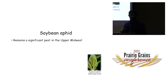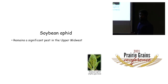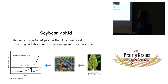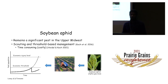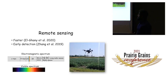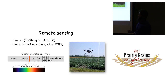Soybean aphid is a new species feeding on soybean and remains a significant pest in the upper Midwest. Treatment decisions are based on field scouting and comparing populations to an economic threshold, so populations can be treated before they reach an economic injury level. But this can be time consuming and can increase the overall cost.